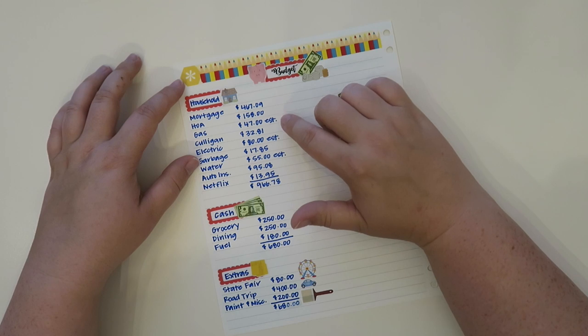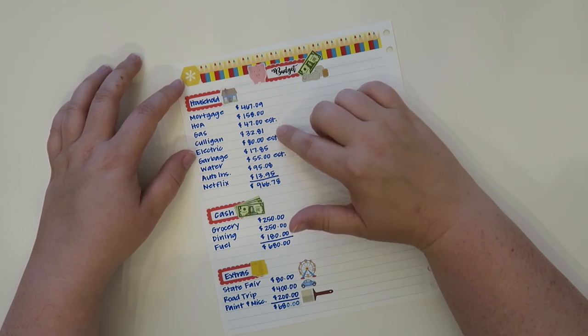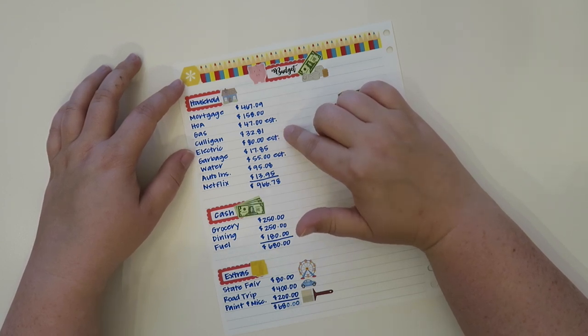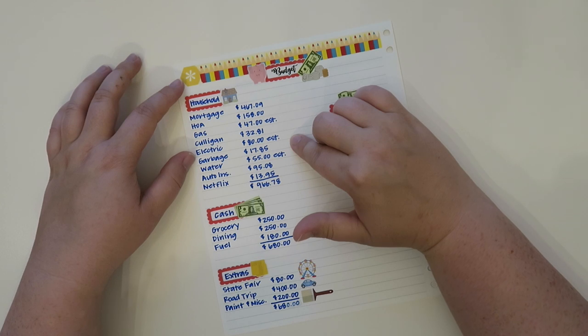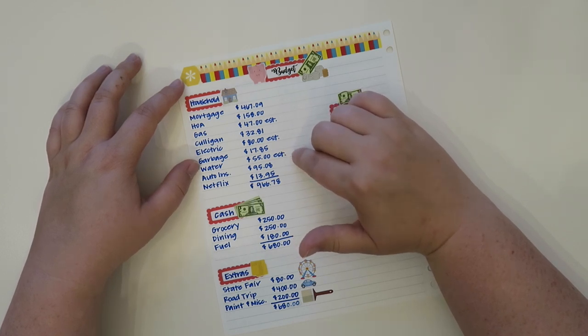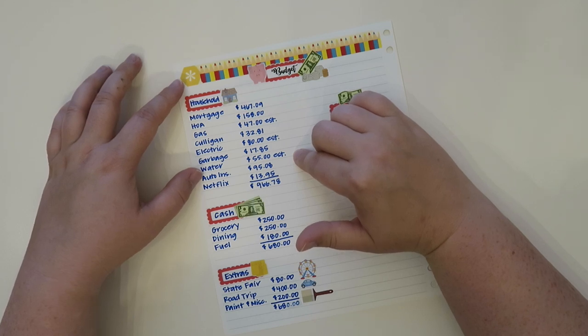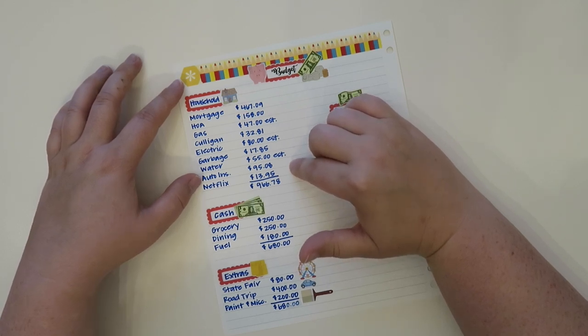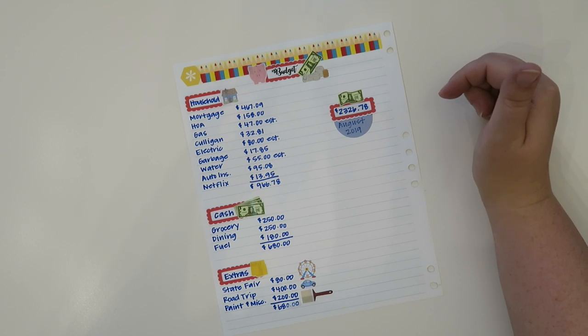My HOA - I do live in like a townhome complex and it is $158. My gas is an estimate of $47. My Culligan - I do rent a water softener because the water is not that great in my area so it's $32.81. My electric estimate is around $80. My garbage and recycle is $17.85. My water estimate is $55. Auto insurance is $95.08 and my Netflix is $13.95 which brings me to $966.78.